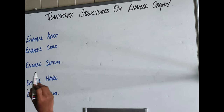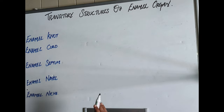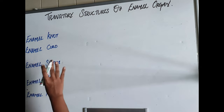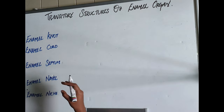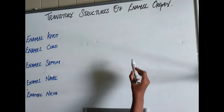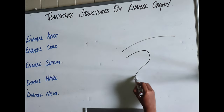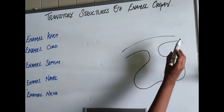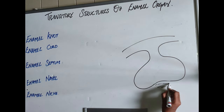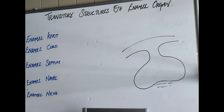Now, coming to the transitory structures of the enamel organ. The word 'transitory' means something which is not permanent. So these are the temporary structures and they will disappear before the enamel formation begins. We have seen up to the cap stage, where we have the dental lamina, enamel organ, dental papilla, etc. Now we will see each structure.